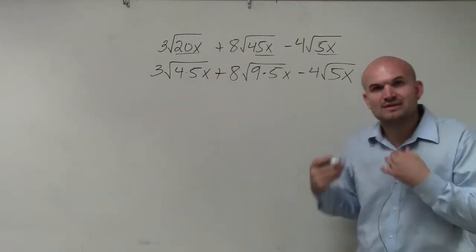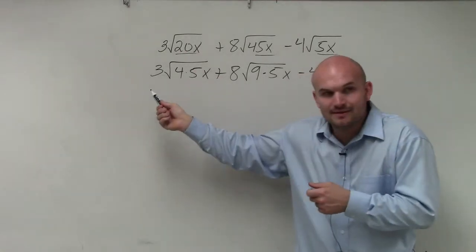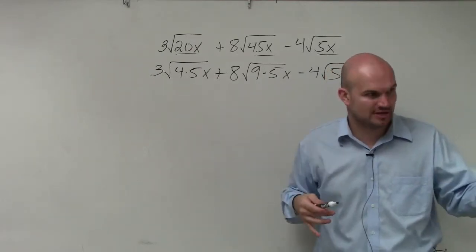What I did was I rewrote this as 4 and 9 multiplied by 5x because 4 and 9 are square numbers. I can take the square root of those square numbers. Do you guys agree with me?